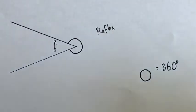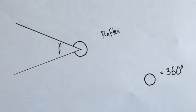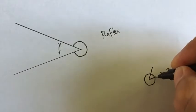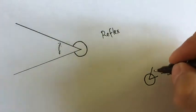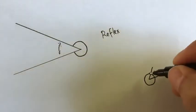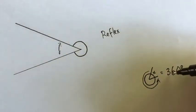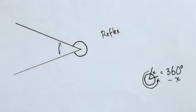So the whole circle is 360 degrees. If I take a chunk out of it here, that will be worth X, and this all the way around here will be worth 360 minus whatever that X was.